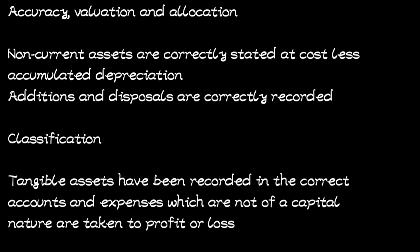Another assertion is accuracy, valuation, and allocation. For accuracy, the objective is to ensure that non-current assets are correctly stated at cost less accumulated depreciation — that is, their net book value. It also ensures that additions and disposals are correctly recorded. For classification, the objective is to ensure that tangible assets are recorded in the correct accounts and that expenses which are not of a capital nature are taken to profit or loss.